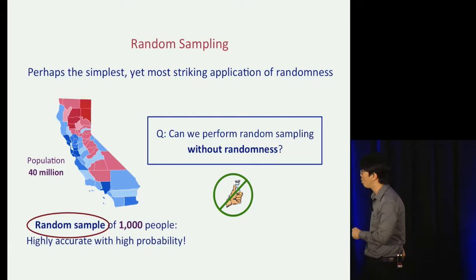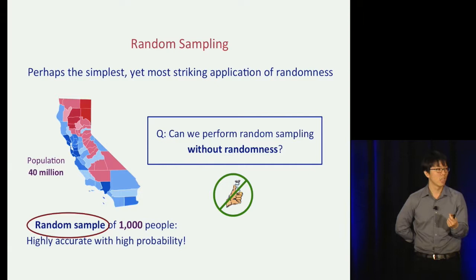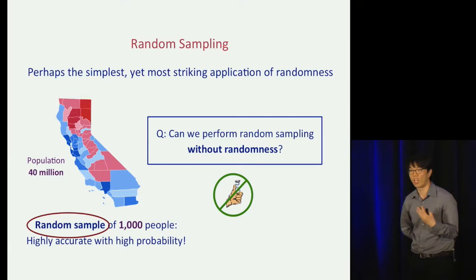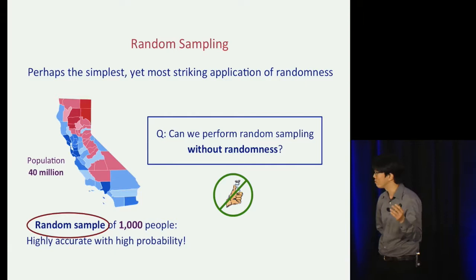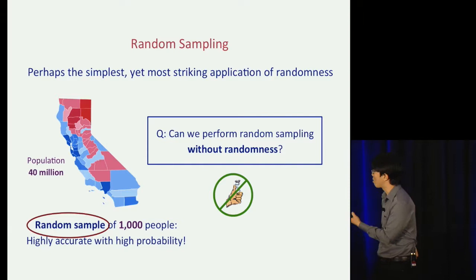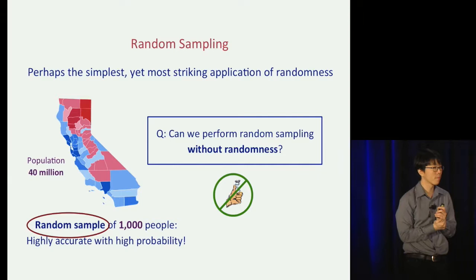Can we perform random sampling without randomness? This seems tricky — the guarantee that a random sample will be highly accurate crucially relies on the fact that the sample is random. If instead of a thousand random people, I polled a thousand people whose last names start with A, or a thousand Stanford undergraduates, then there's no guarantee. And yet, somewhat surprisingly, we'll see an example where we can come very close to matching the performance of random sampling without using any randomness at all.